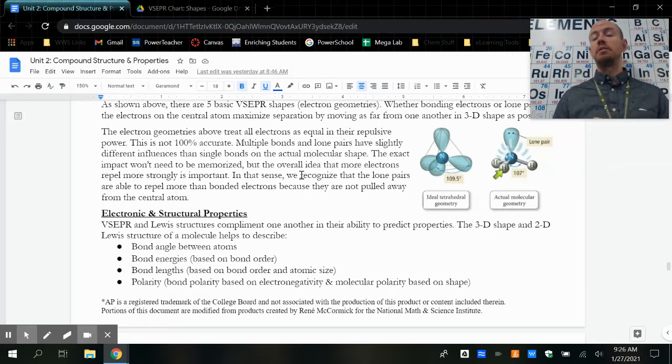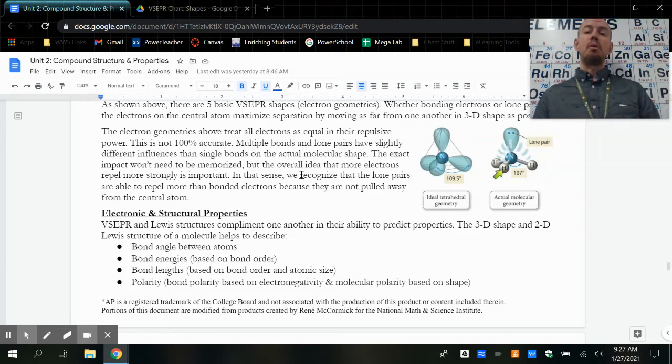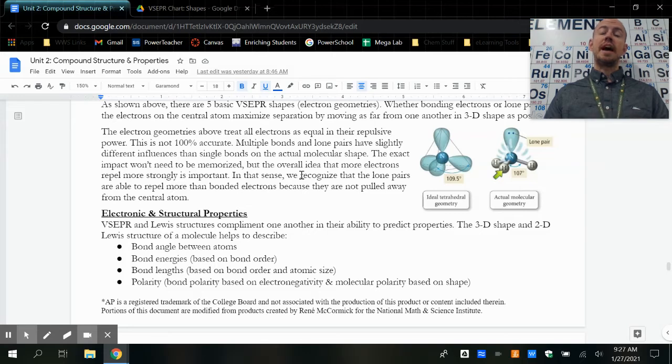The reason that this is possible and important is that this tells us much more than a Lewis structure can. It helps us to describe the bond angle - how close are these atoms actually together? It helps us to know about bond energies. Along with a Lewis structure, the shape can add a little bit more to that bond order and strength. The bond length, which is very well described by Lewis structures, VSEPR helps us to see how that looks different. And most importantly, this three-dimensional shape helps us to know whether molecules and bonds are polar or nonpolar. The Lewis structure tells us a lot, and adding VSEPR to that tells us even more.